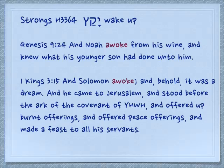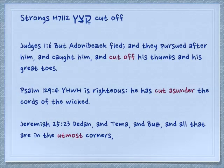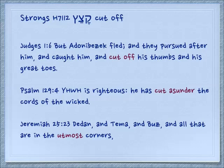So many times in these small two-letter roots, we see different hollow verbs that have the same meaning, and verbs that start with Yud that have the same meaning. Here is a gem where the last two letters are the same and have the same meaning — where at the end of something, it's cut off. Judges 1:6 — But Adonibezek fled and they pursued after him and caught him and cut off his thumbs and his great toes. Psalm 129:4 — Yehovah is righteous; he has cut asunder the cords of the wicked. Jeremiah 25:23 — Dedan and Tema and Buz, and all that are in the uttermost corners — the end parts, the parts that are cut off from everything else.